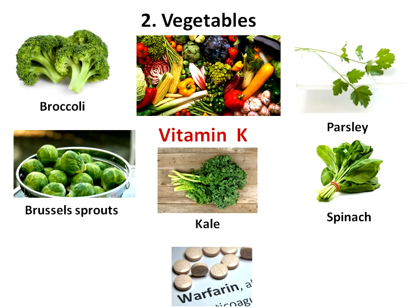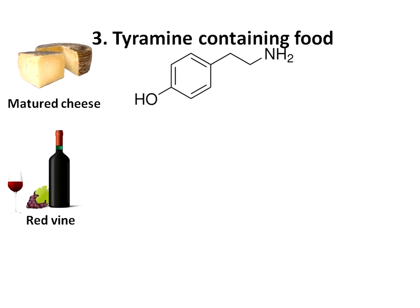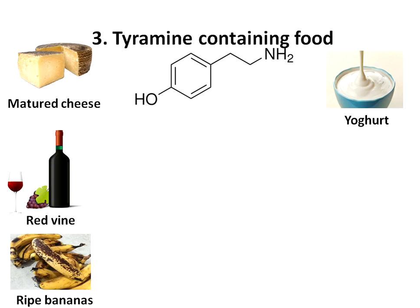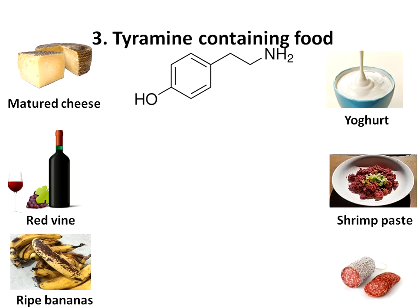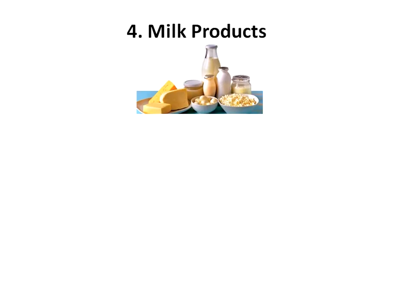Third, tyramine-containing foods. Tyramine-containing foods — matured cheese, red wine, very ripe bananas, yogurt, shrimp paste, and salami — when taken with monoamine oxidase inhibitors (MAOIs), are capable of producing a hypertensive crisis. MAOIs are the drug class used to treat depression.